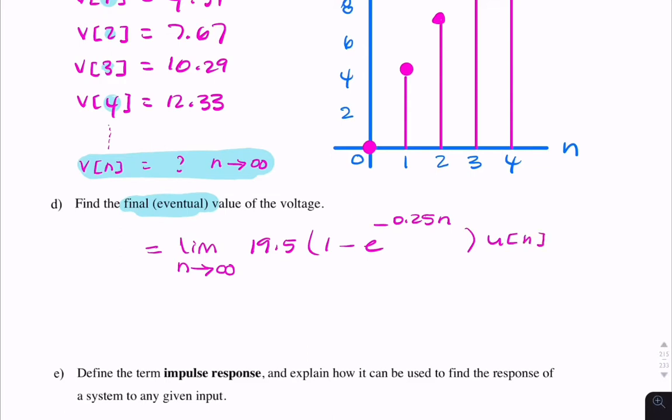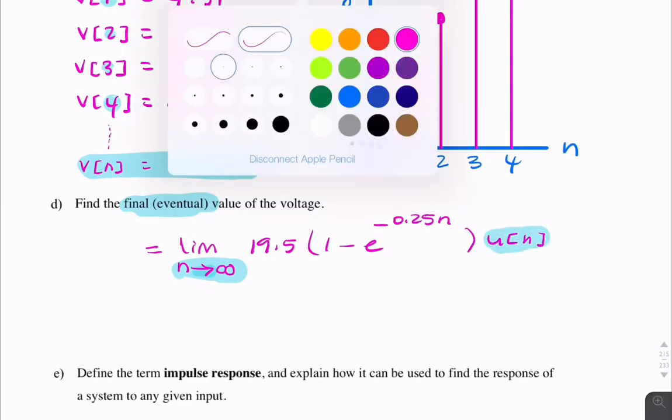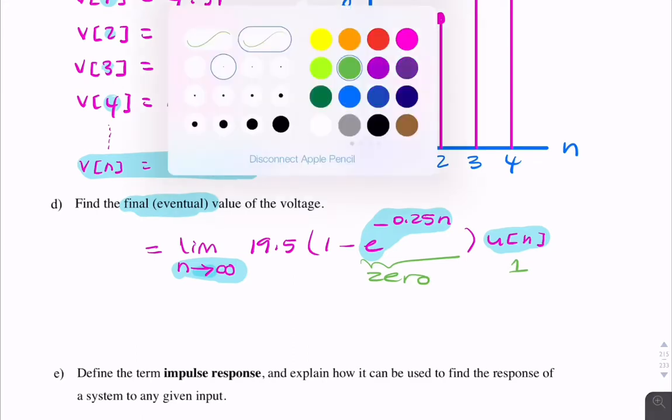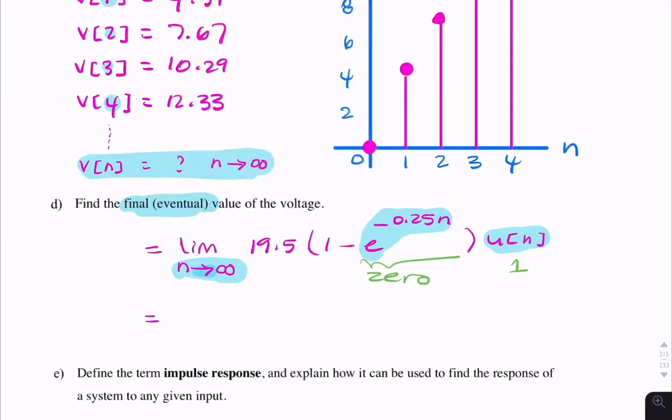It's 19.5 times 1 minus e to the minus 0.25 N times U of N. As N approaches infinity, the unit step remains 1, but this exponential approaches 0. So your eventual value would simply be 19.5 volt. That's the answer for part D.